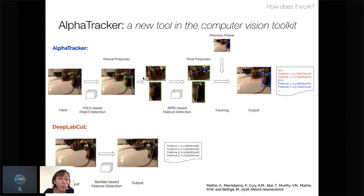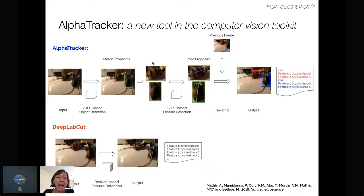What have we done to make this work? We've used a YOLO-based object detection bounding box, which keeps identity switches from happening. We use a squeeze-and-excitation SPPE-based feature detection, then post proposals considering the previous frame. These are some of the add-ons we've implemented that are different from DeepLabCut.